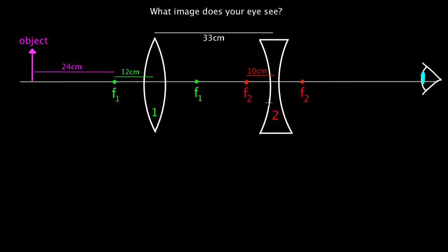If I had been handed this problem on a physics test, I probably would have freaked out. This looks really intimidating, but it's actually not that bad. It's a classic example of a two-lens system. And overall, before we get lost in details here, the overall idea of how we're going to approach this is this.